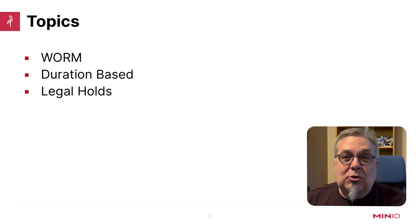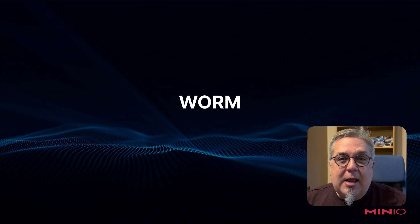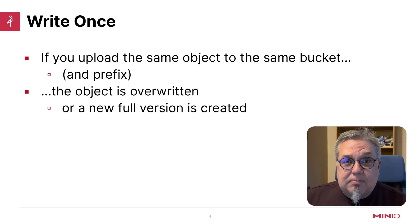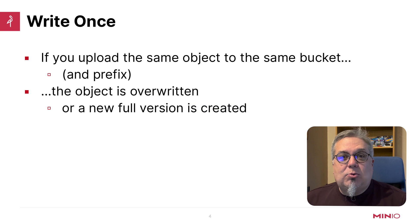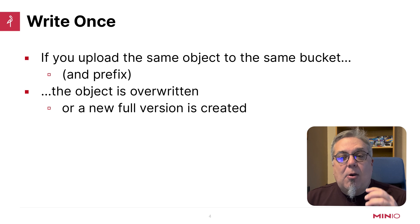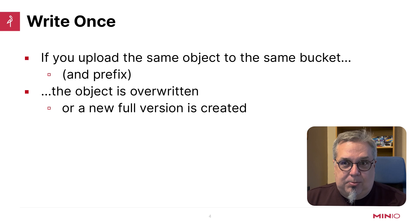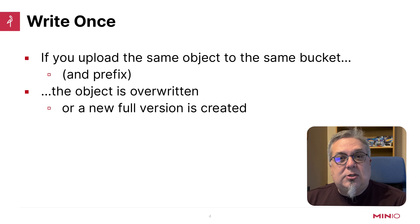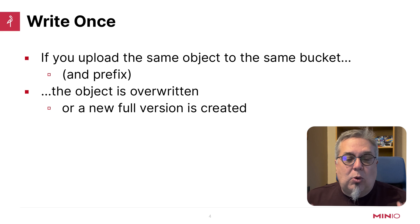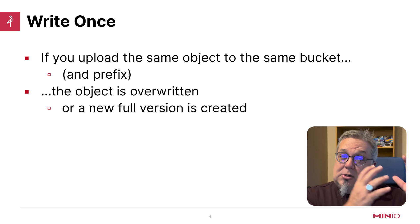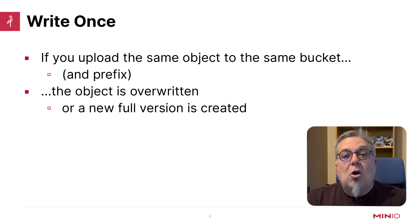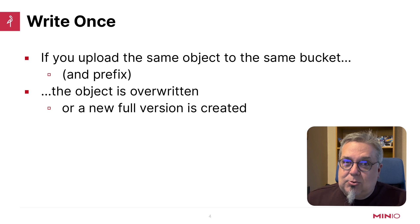Let's dive right in and talk about WORM, W-O-R-M. WORM stands for write once. When we're talking about write once, what we're saying is if you upload the same object to the same bucket — basically to the same namespace — that object is going to be overwritten unless you have versioning on, in which case a new version will be created. You're only going to write it once. No modifications will ever take place to an object that has already been uploaded to MinIO. You're either going to delete the previous object entirely or you're going to create a new version.